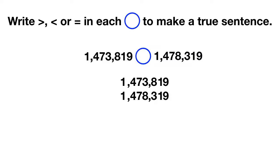Next we have a 4 and a 4 — those are the same, so cross them out and move to the next place value. Next we have the 7 and the 7 — again they're the same, so cross them out and move over. Now we have a 3 and an 8 — these are not the same, so this is the place value that'll let us decide. Which is larger, 3 or 8? The 8 is larger, which means the second number must be bigger.